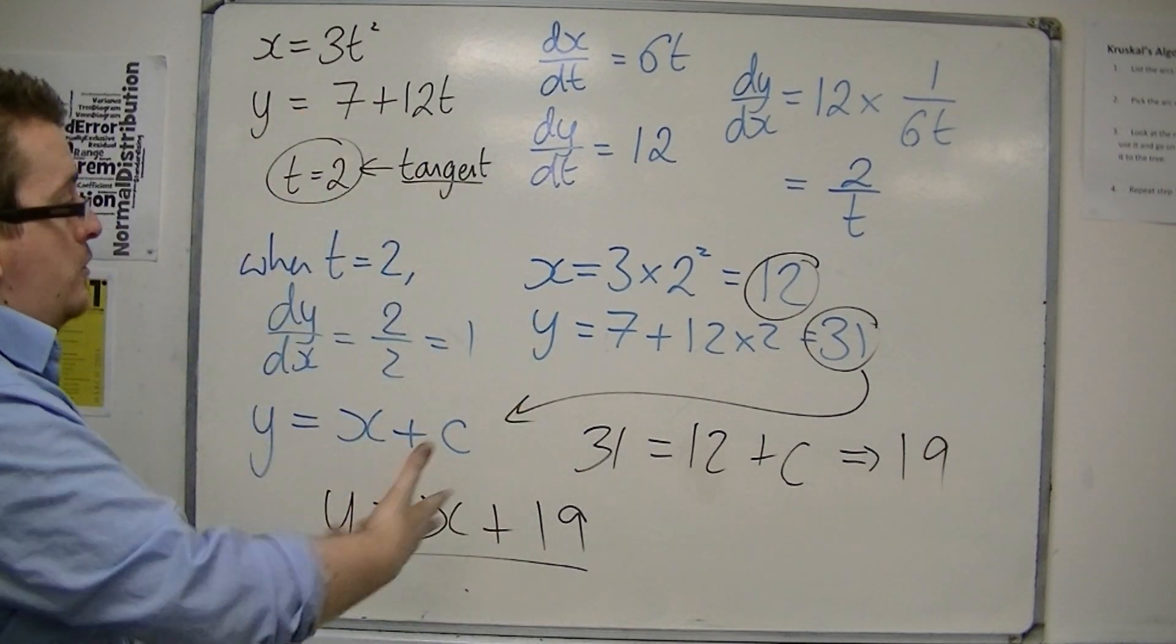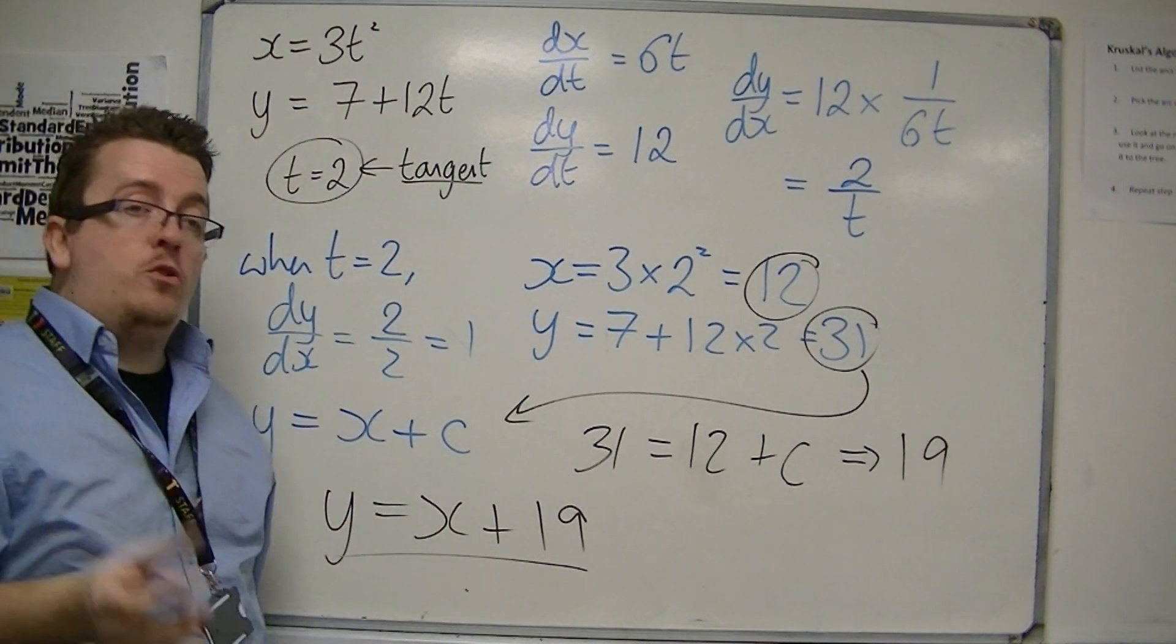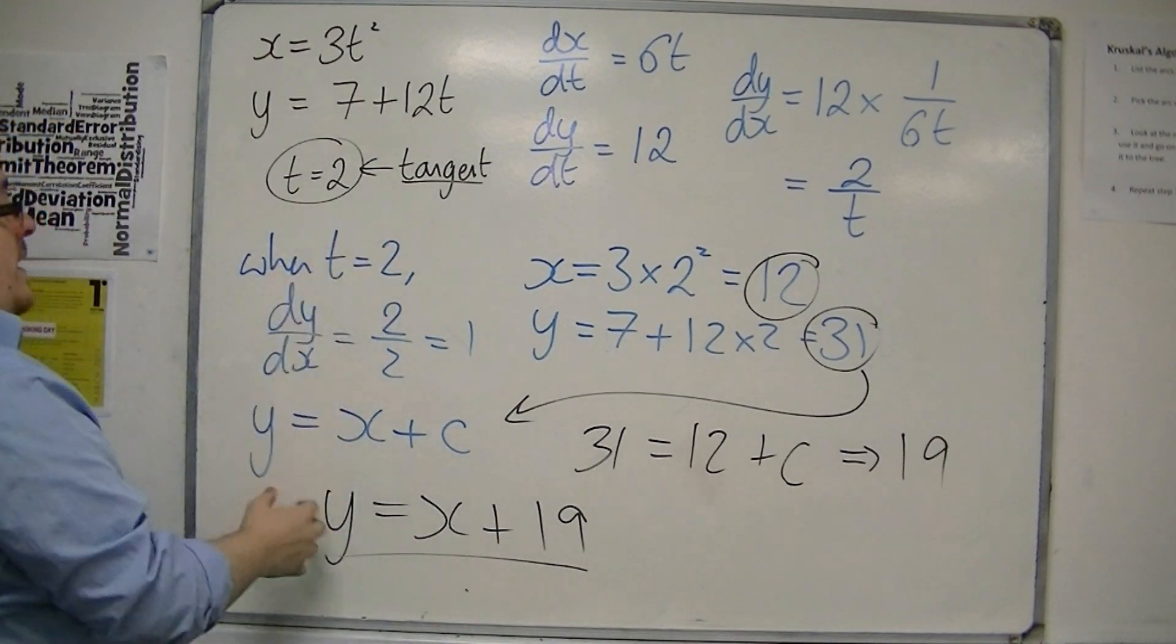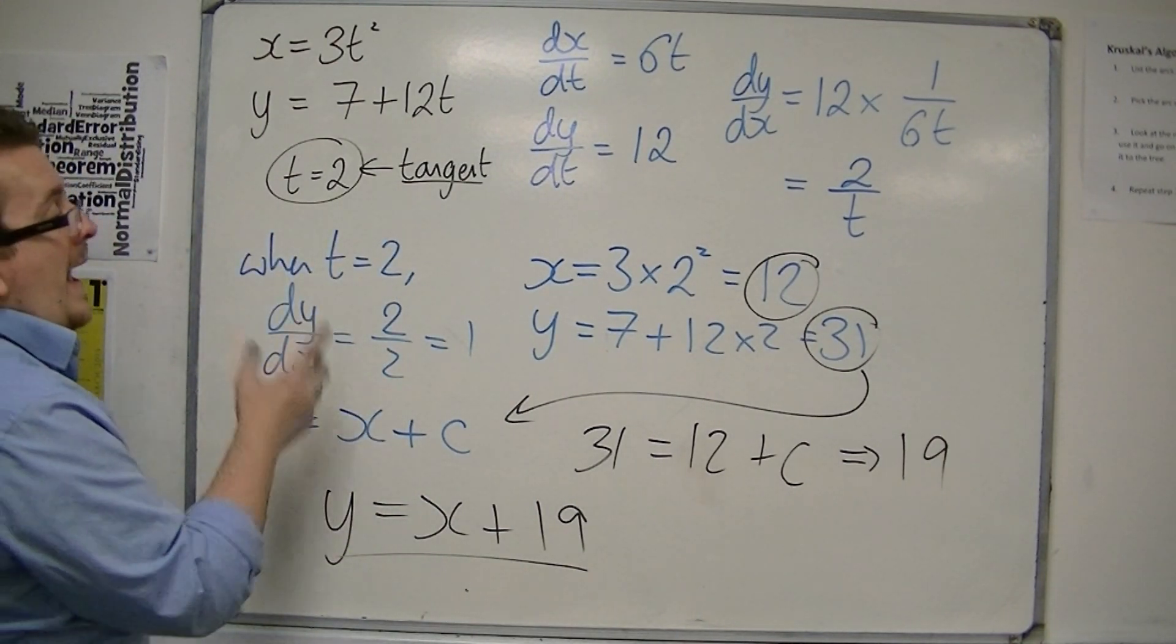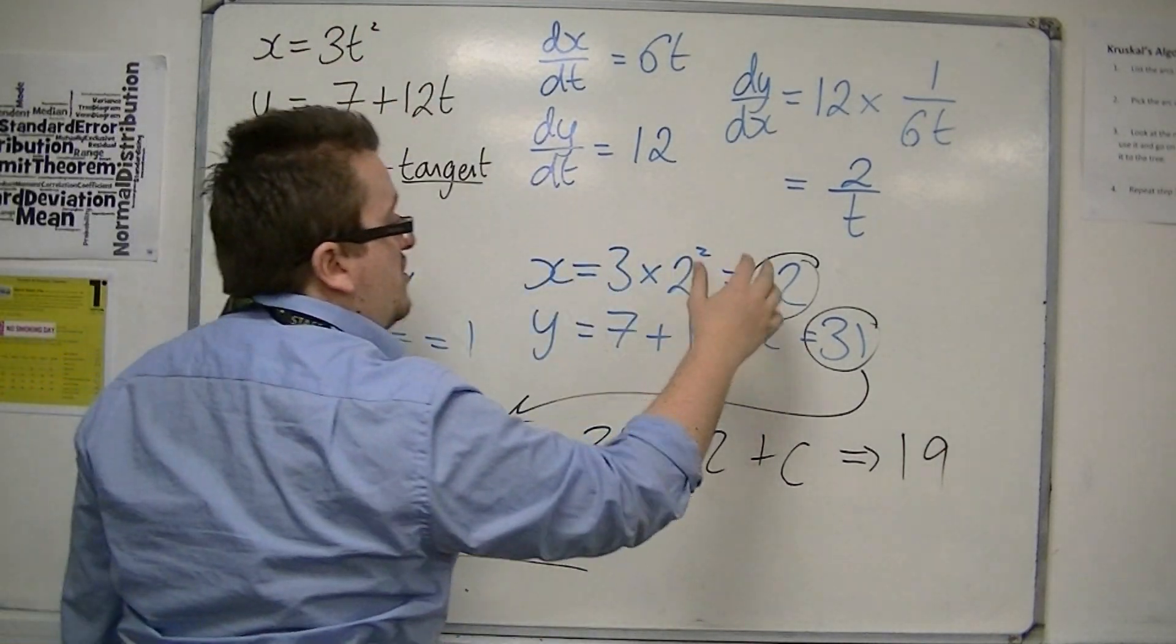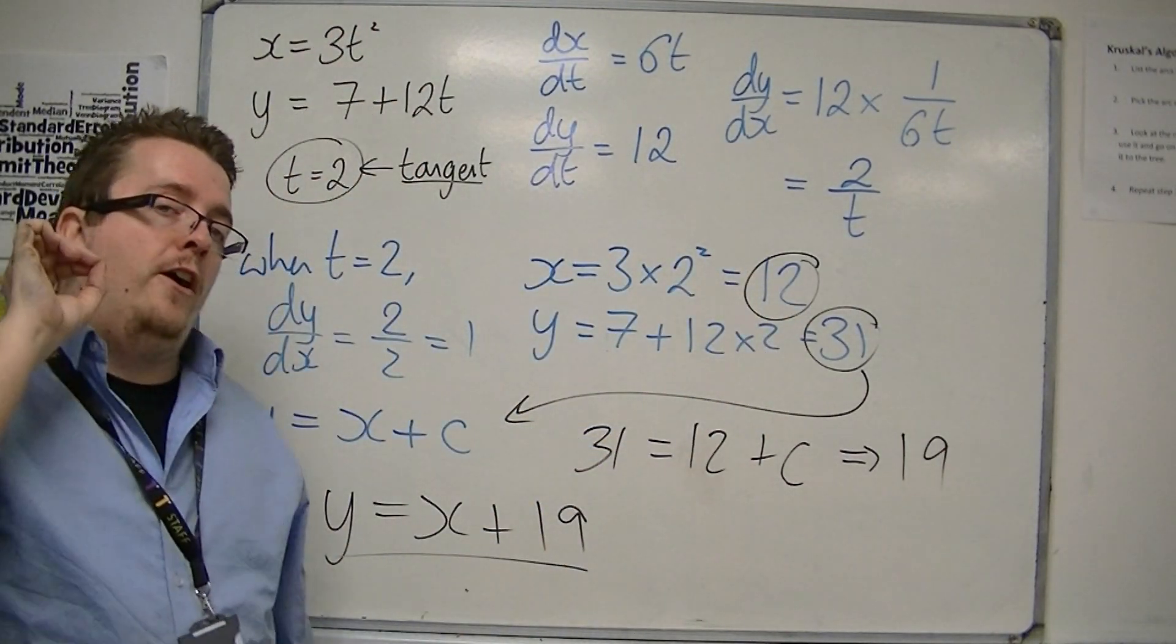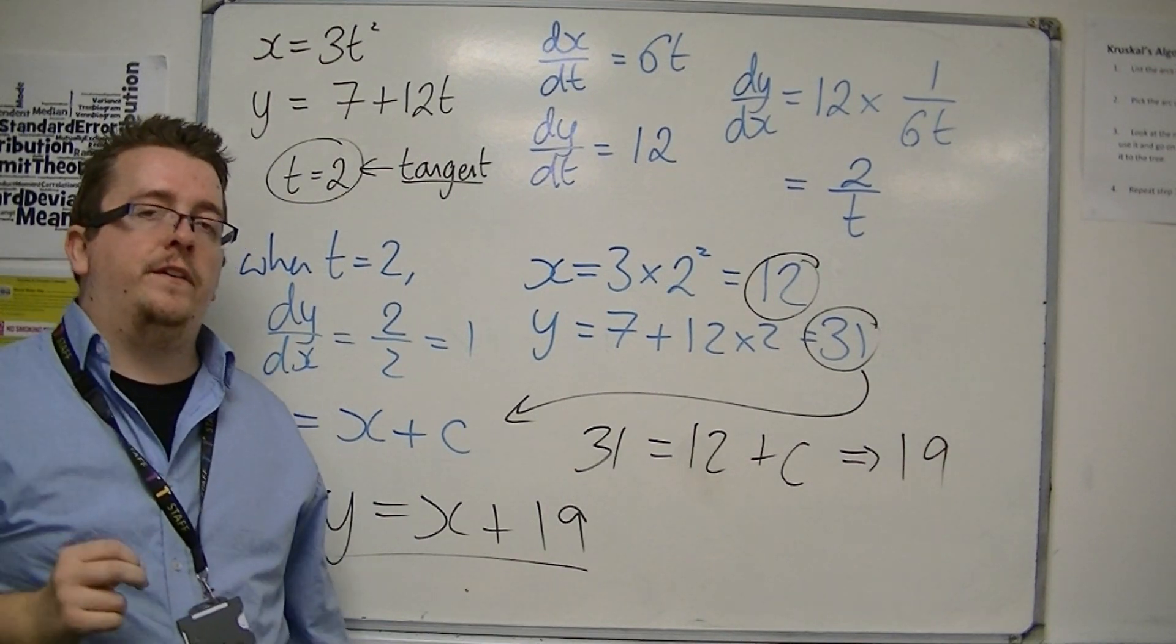And that's how straightforward this can be. Just make sure you're substituting t equals 2 into the derivative to get the gradient of the line, and you're substituting it into the two original equations to work out the coordinates of where that tangent is cutting the curve.